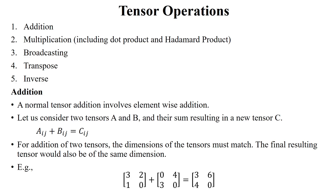Hello everyone. Tensors have different kinds of operations like addition, multiplication — which includes dot product and Hadamard product. A third important operation is broadcasting, and there is also transpose and inverse.